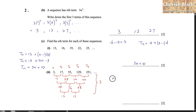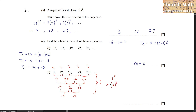Since we are getting three differences to reach a constant, that means the nth term will be based on n cubed. So n cubed has to be the foundation. We then try and test: substituting n equals 2 gives 8, but the second term is 17. If we multiply by 2 we get 16, which is still not 17. In order to get 17, we add 1, giving us 2n cubed plus 1 as the answer.